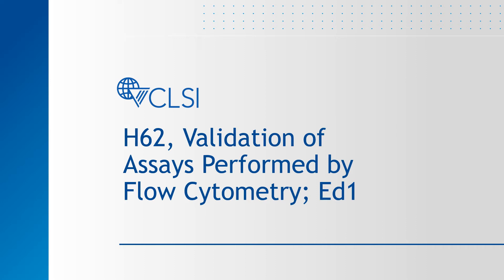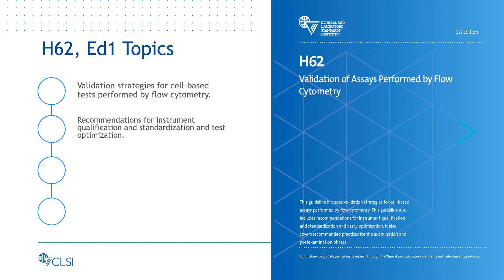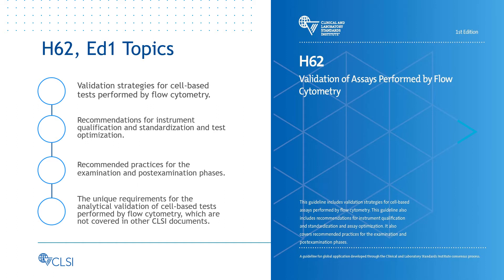Welcome to this overview of CLSI's H-62, Validation of Assays Performed by Flow Cytometry, First Edition. CLSI's H-62 includes validation strategies for cell-based tests performed by flow cytometry, recommendations for instrument qualification and standardization, test optimization, and recommended practices for the examination and post-examination phases. It focuses on the unique requirements for the analytical validation of cell-based tests performed by flow cytometry, which are not covered in other CLSI documents.